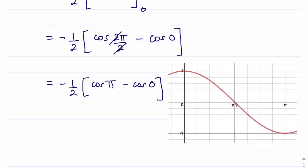If I look at the cosine graph, I can see that at π, the value of cos π is negative 1. I can also see that cos 0 is 1. So what I've got here is negative 1/2. We've seen that cos π is negative 1, then we've got the minus sign, and cos 0 is 1.